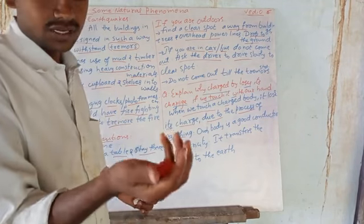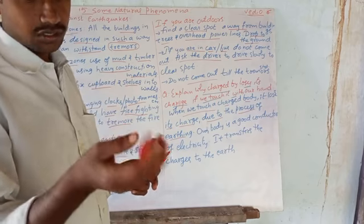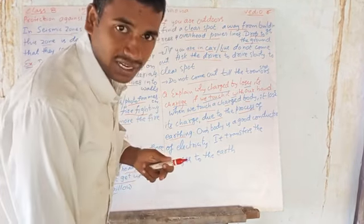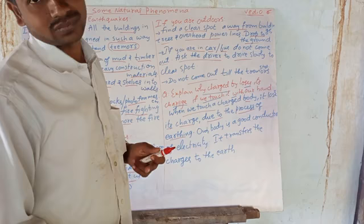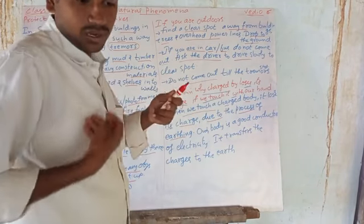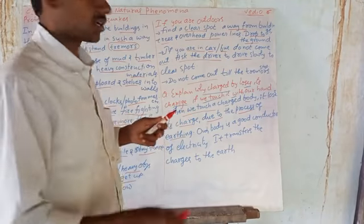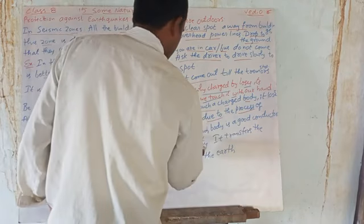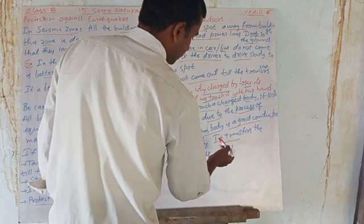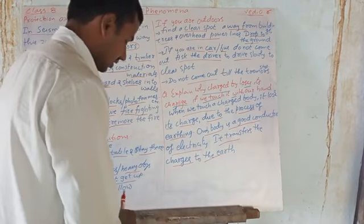For example, if this cap is a charged body and I touch it with my hand, it will lose its charge. The charge passes through my hand, through my body, down to the earth. The earth receives and takes the charge of the charged body. This happens because our body is a good conductor of electricity, and it transfers the charges to the earth — that is the process of earthing.